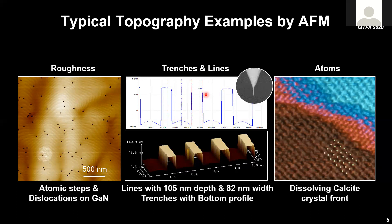We might be interested in the width, the height, maybe the sidewall slope, or the profile at the bottom. This particular profile has a rounded surface feature. To reach that type of feature, we need to adapt our AFM tip — not only to be very sharp for high resolution, but also to have a long spike so we can actually enter these trenches.